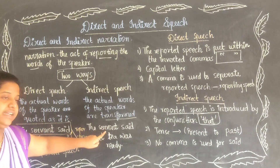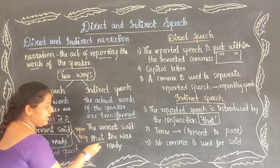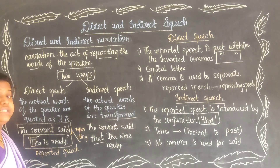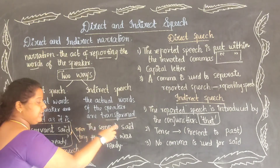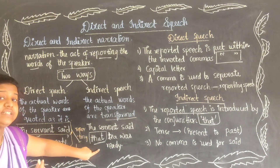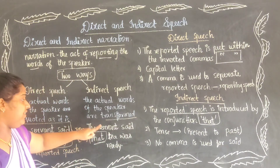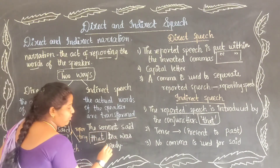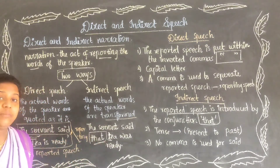See here: 'The servant said that tea was ready.' We added the conjunction 'that' to join the reporting speech and the reported speech. We should not begin the reported speech with a capital letter because there is no comma — we use 'that' instead.